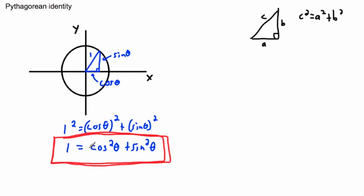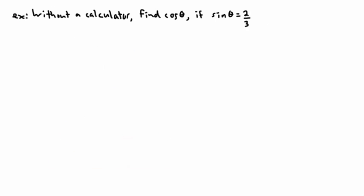Why do we use this? It's really handy if you're trying to convert from cosines to sines. You can get cos squared as one minus sine squared. It's also useful when working with cotangents, secants, and other identities, and you can solve questions without even needing to find the angle. Here's an example: without a calculator, find cosine theta if sine theta equals two over three. I'll show you two methods — method one using the Pythagorean identity, and method two by drawing it.